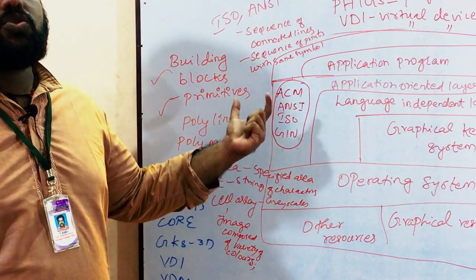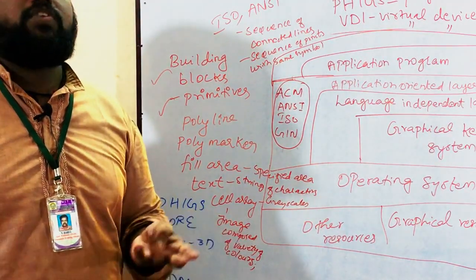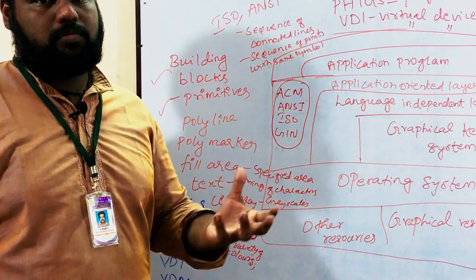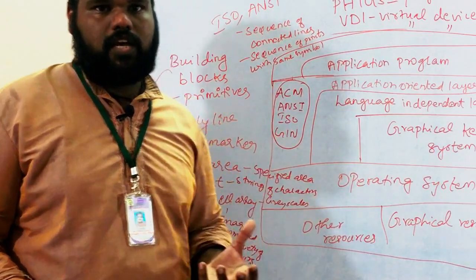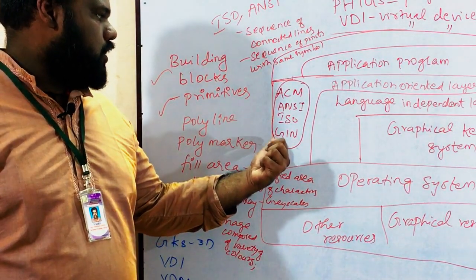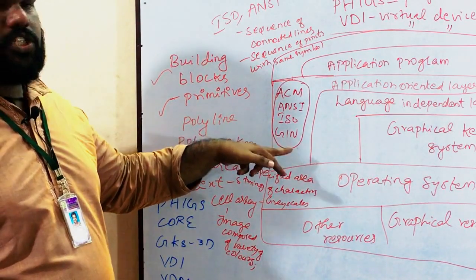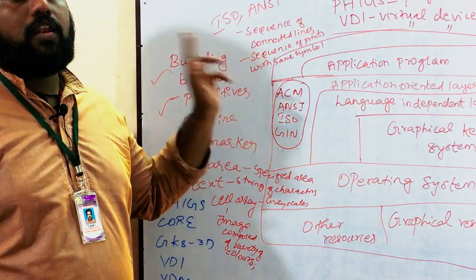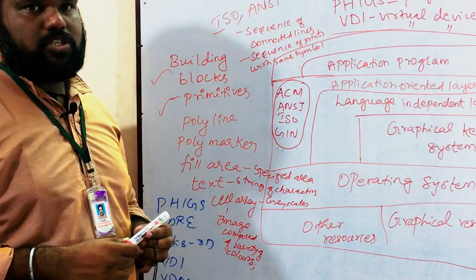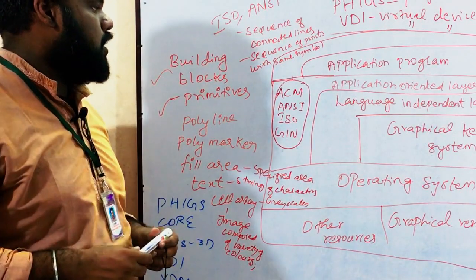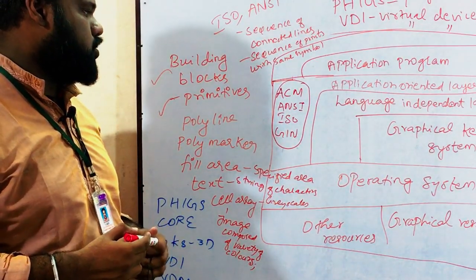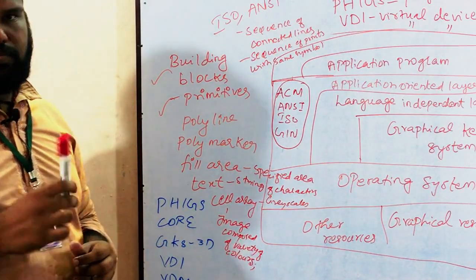Let's look at what standards institutes exist for CAD. In India, we have BIS, Bureau of Indian Standards. Common international standards bodies include ISO (International Standards Organization), ANSI (American National Standards Institute), DIN (German Institute of Standards), and ACM (Association of Computer Machinery).